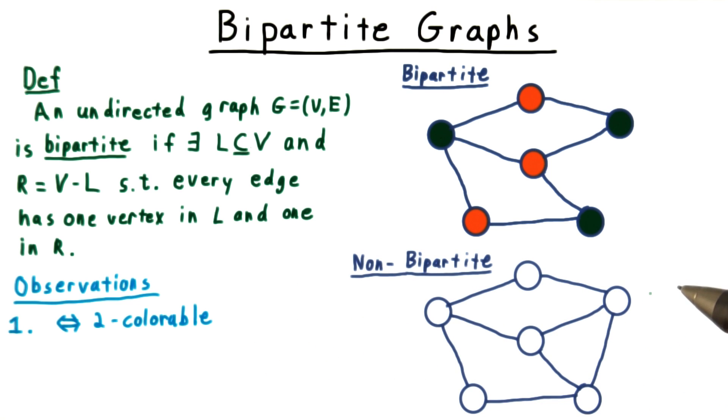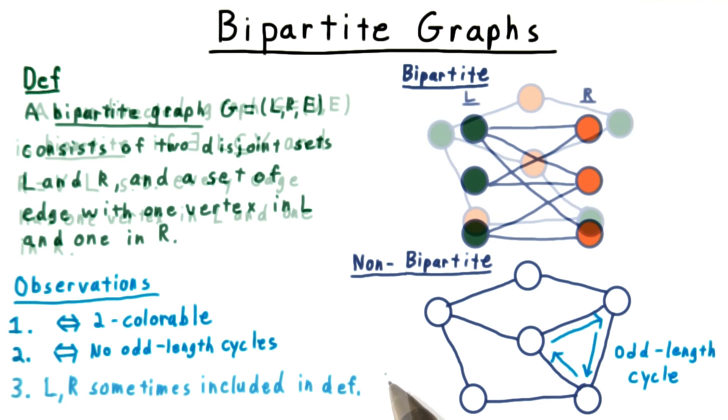Next, let's take the same graph and add this edge here to make it non-bipartite. Note that I've introduced an odd-length cycle, and indeed saying that a graph is bipartite is equivalent to saying that it has no odd-length cycles.